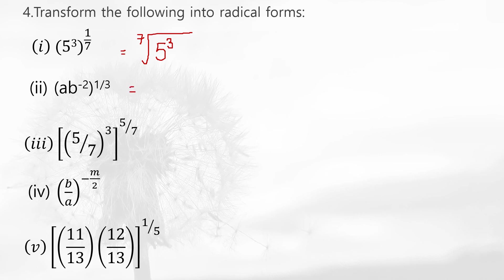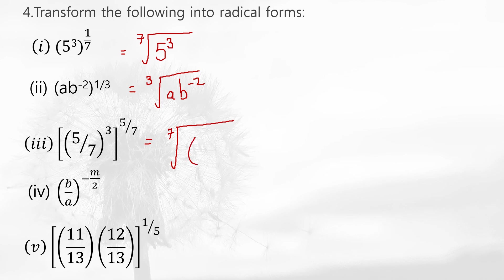For the next one, the exponent is upon 7, meaning this is the seventh root. You write the radical with index 7 and the number 5 by 7 to the power 3 and another factor of 5 inside. Now for the ones with negative exponents, to convert them to positive we need to invert the fraction — shift A and B. We write it as the root of A by B to the power M.